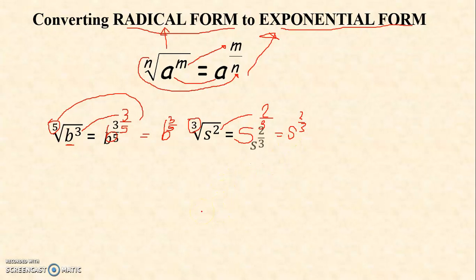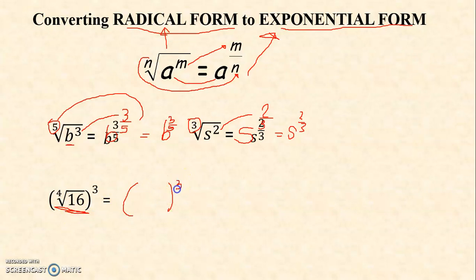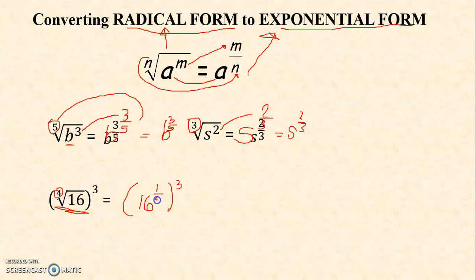The next one: the fourth root of 16 raised to 3. We're going to rewrite this. We're going to write 16 here. The exponent is a fraction. Can you see any exponent of 16? None — but that is understood to be 1. And your index here is 4. Therefore, your denominator will be 4. So that is not yet in simplified exponential form, but we can still rewrite it.